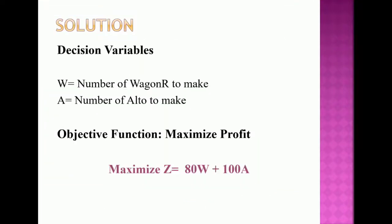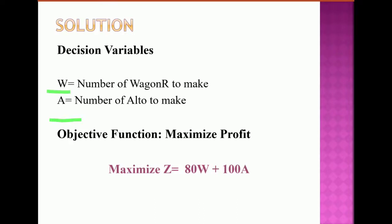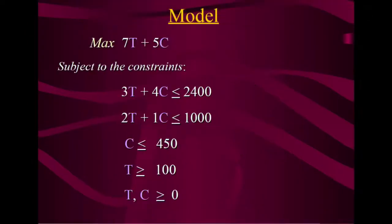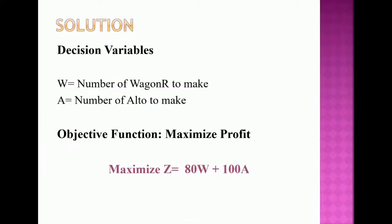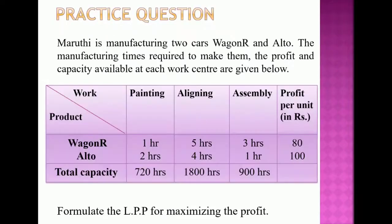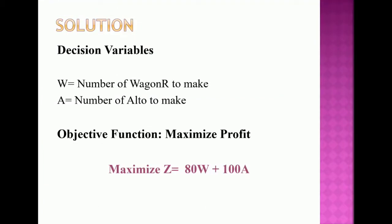For the solution, the decision variables are W (number of WagonRs to be made) and A (number of Altos to be made). The objective function is to maximize profit: Maximize Z = 80W + 100A, where 80 is the profit per WagonR and 100 is the profit per Alto.